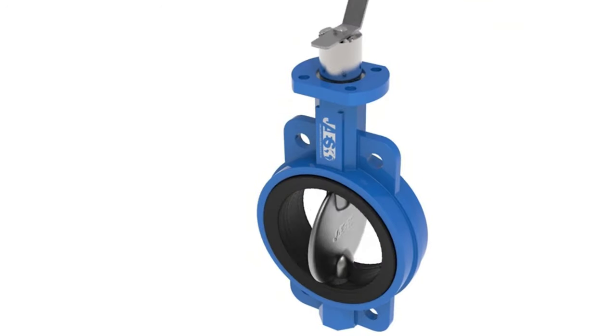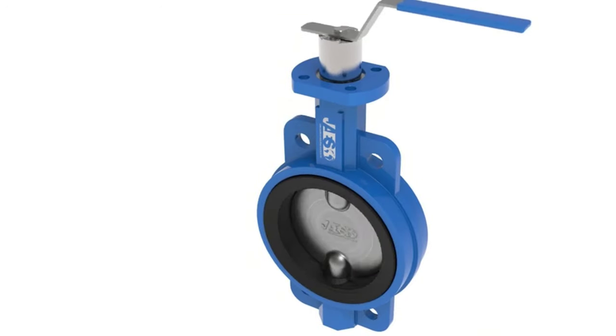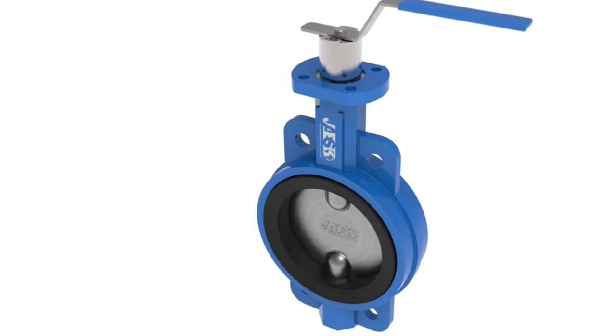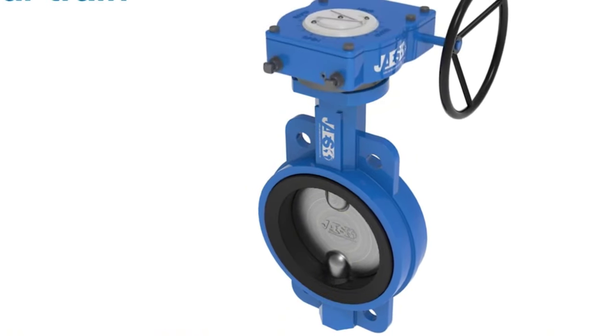A butterfly valve is a valve that isolates or regulates the flow of a fluid. The closing mechanism is a disc that rotates. The disc is positioned in the center of the pipe. A rod passes through the disc to an actuator on the outside of the valve.